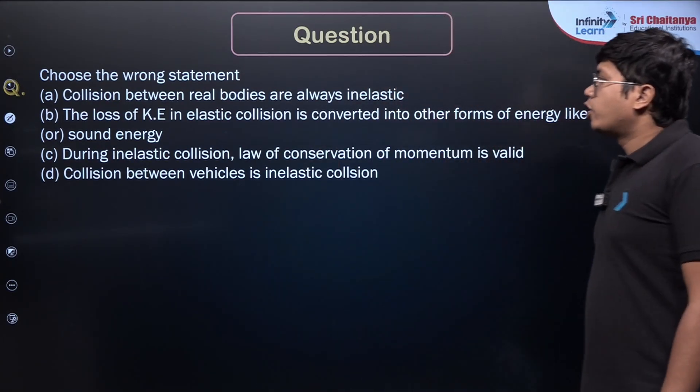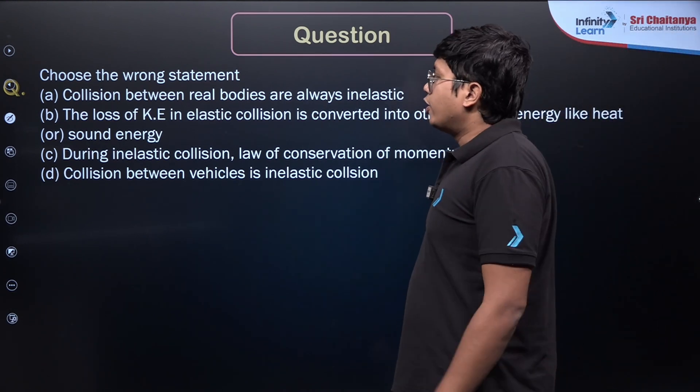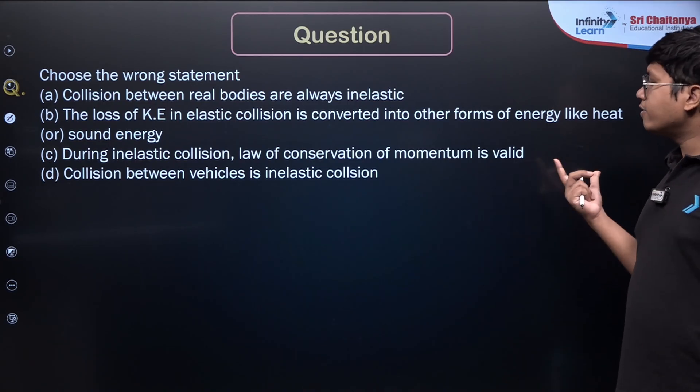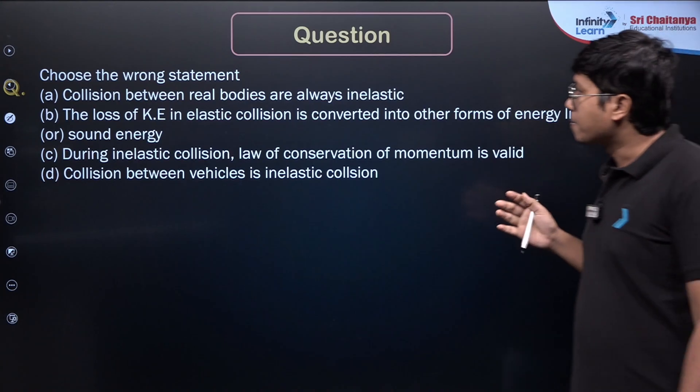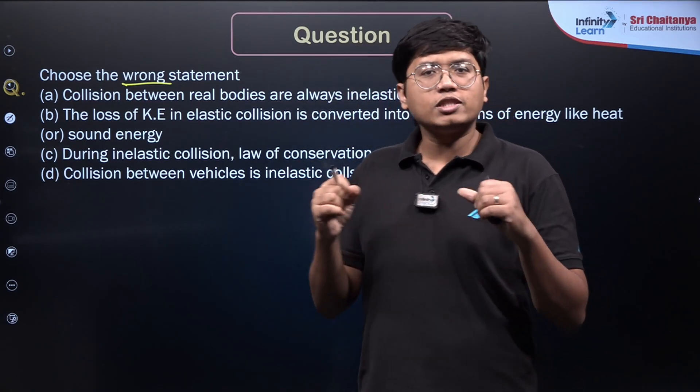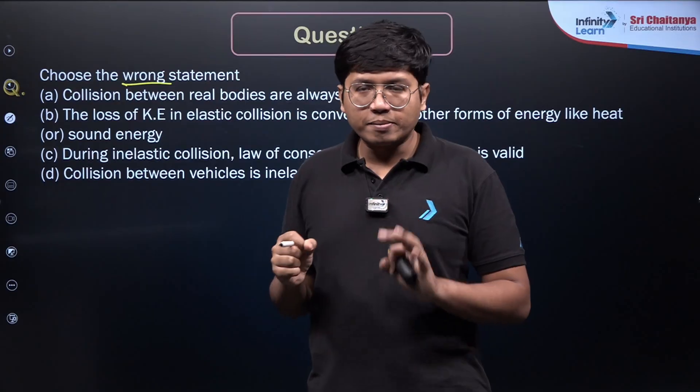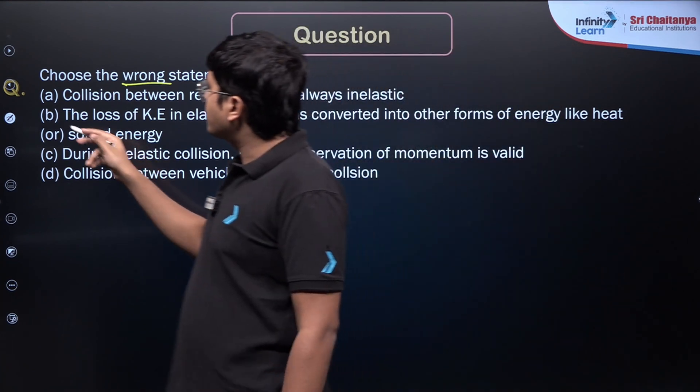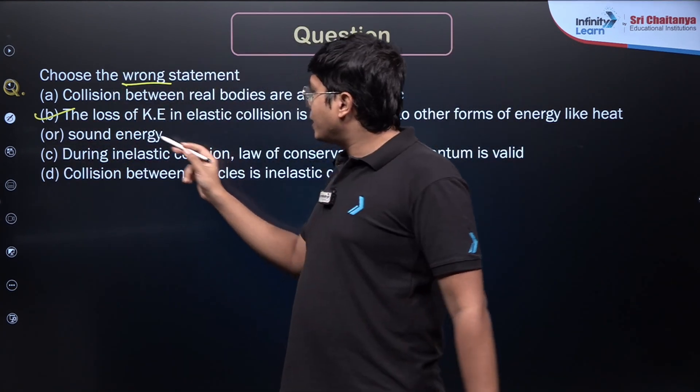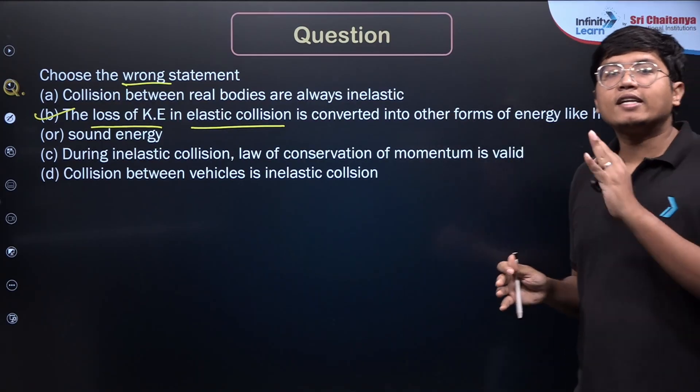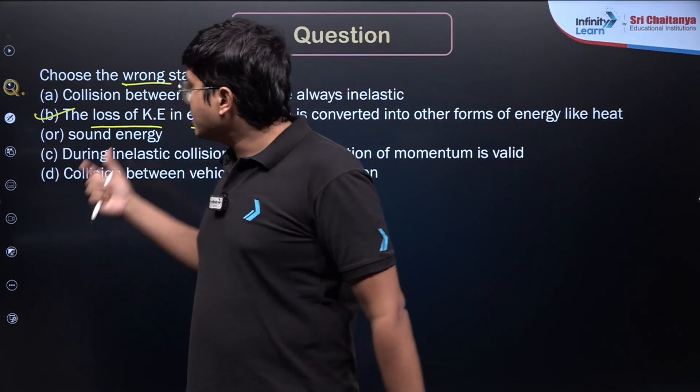So next one says collision between real bodies are always inelastic. Loss of kinetic energy in elastic collisions is converted into other forms of energy like heat and sound. During elastic collision, law of conservation is valid, and collision between vehicles is inelastic. So we want the wrong statement. We can clearly see collision between real bodies are always inelastic. Yes, in real scenarios it is always inelastic. Perfectly elastic collisions are extremely rare. Loss of kinetic energy in elastic collisions is converted—I know this is the incorrect statement. Even I do not need to proceed, because they are mentioning about a loss of KE in elastic collisions. Elastic collisions' distinct property itself is that there is no loss of kinetic energy. So that means this is the incorrect one.